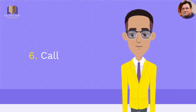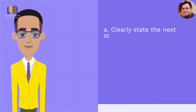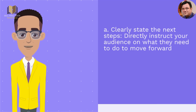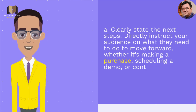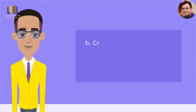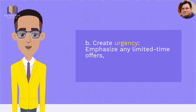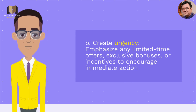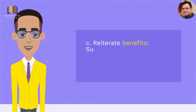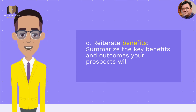6. Call to action. A. Clearly state the next steps — directly instruct your audience on what they need to do to move forward, whether it's making a purchase, scheduling a demo, or contacting your sales team. B. Create urgency — emphasize any limited time offers, exclusive bonuses, or incentives to encourage immediate action. C. Reiterate benefits — summarize the key benefits and outcomes your prospects will experience by accepting your offer.